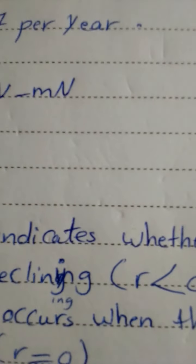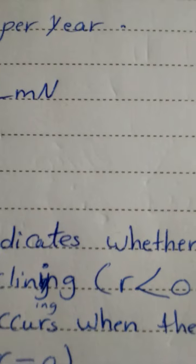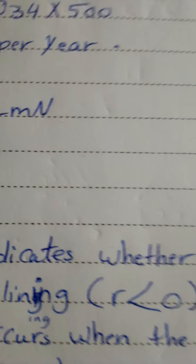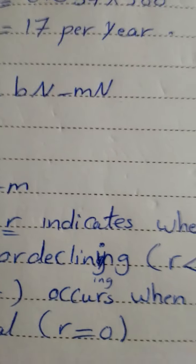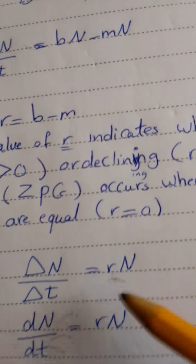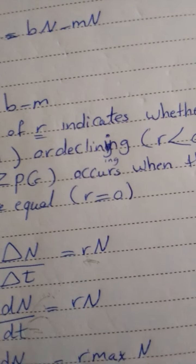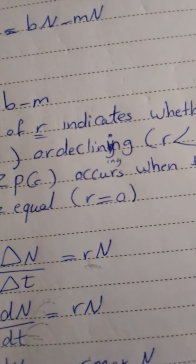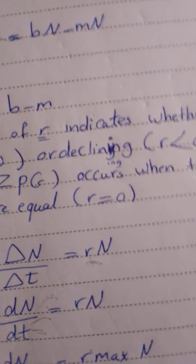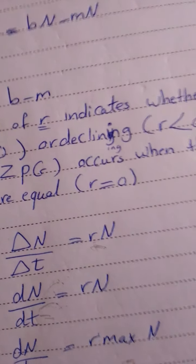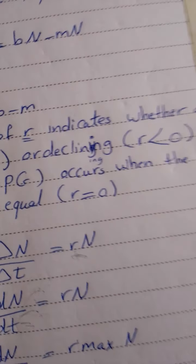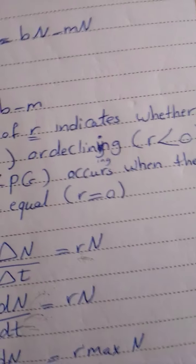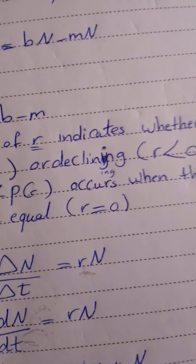Zero population growth (ZPG) occurs when the per capita birth and death rates are equal, so R = 0. Births and deaths still occur in such a population, of course, but they balance each other exactly. Using the per capita rate of increase, we can rewrite the equation as: delta N / delta T = RN. Most ecologists use differential calculus to express population growth as a growth rate at a particular instant in time: dN/dT = rN. If you have not yet studied calculus, don't be intimidated — it is essentially the same as the previous equation, except that the time intervals are very short.